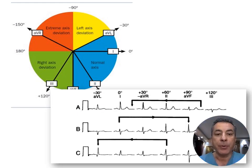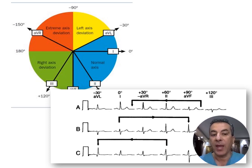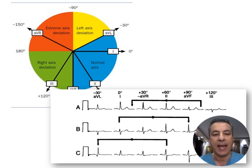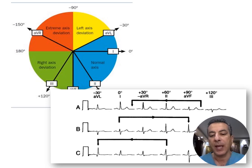Some simple rules to determine the frontal axis: the axis is typically towards the tallest R wave. If two leads have waves of equal amplitude, the axis lies at the midpoint between them. Also, if a biphasic QRS complex is present in a lead, the axis is usually perpendicular to that lead's axis, directed towards the positive lead.